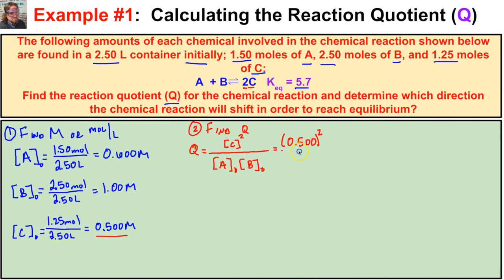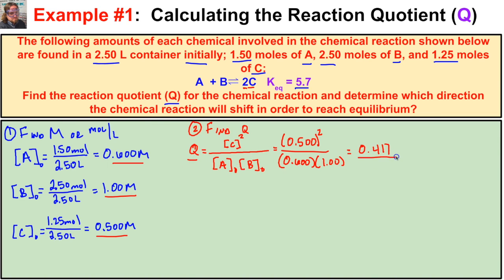Calculating: 0.500 squared divided by 0.600 times 1.00 gives us a Q value of 0.417.